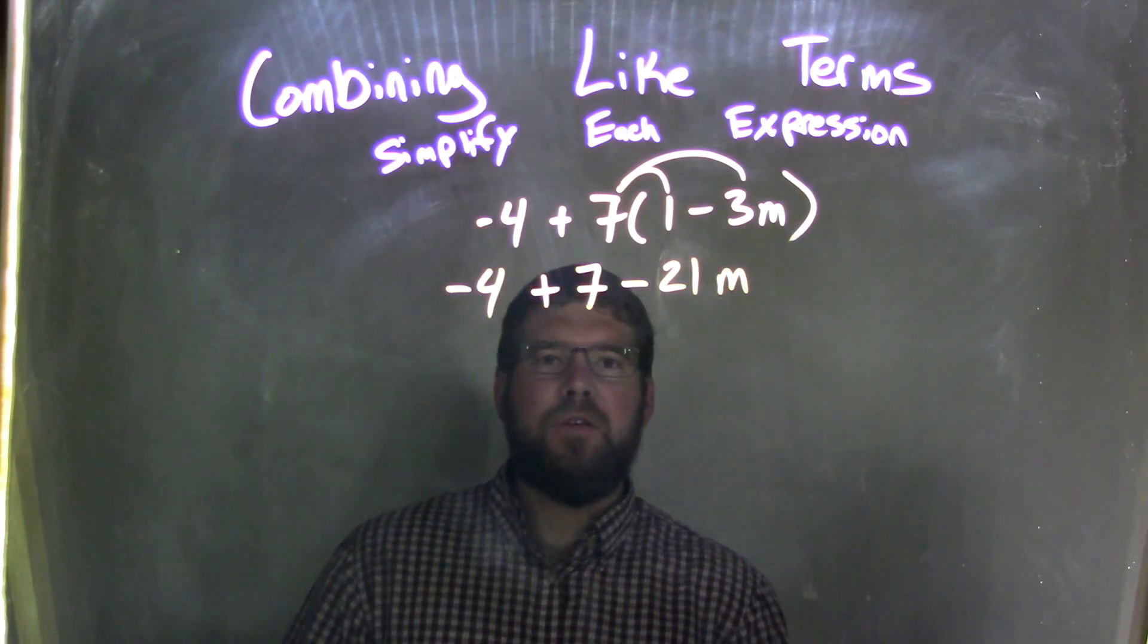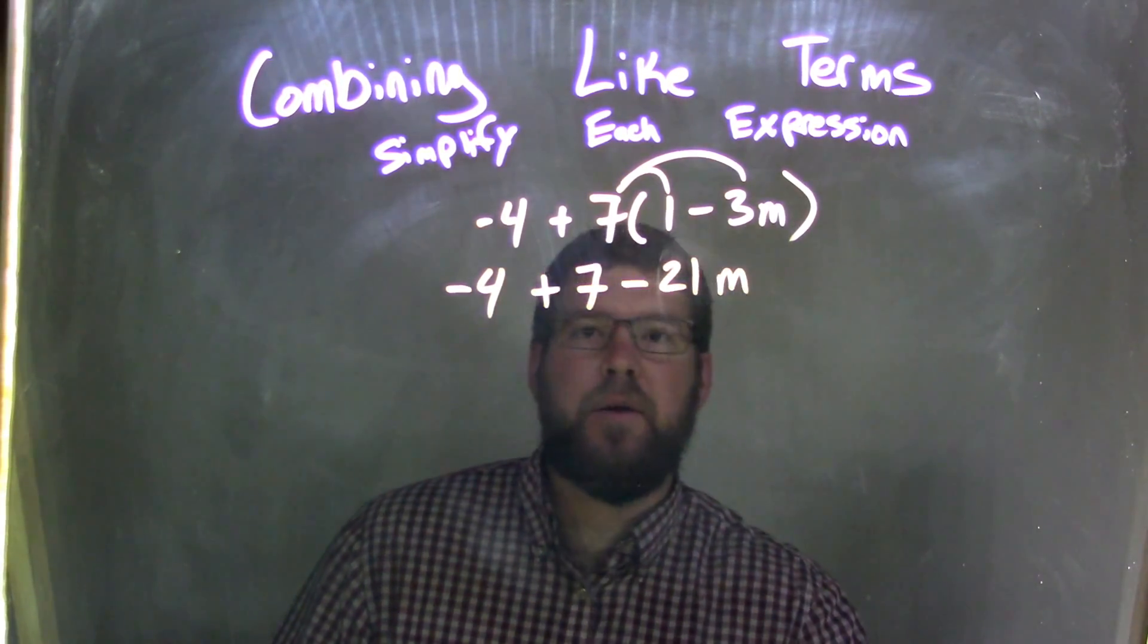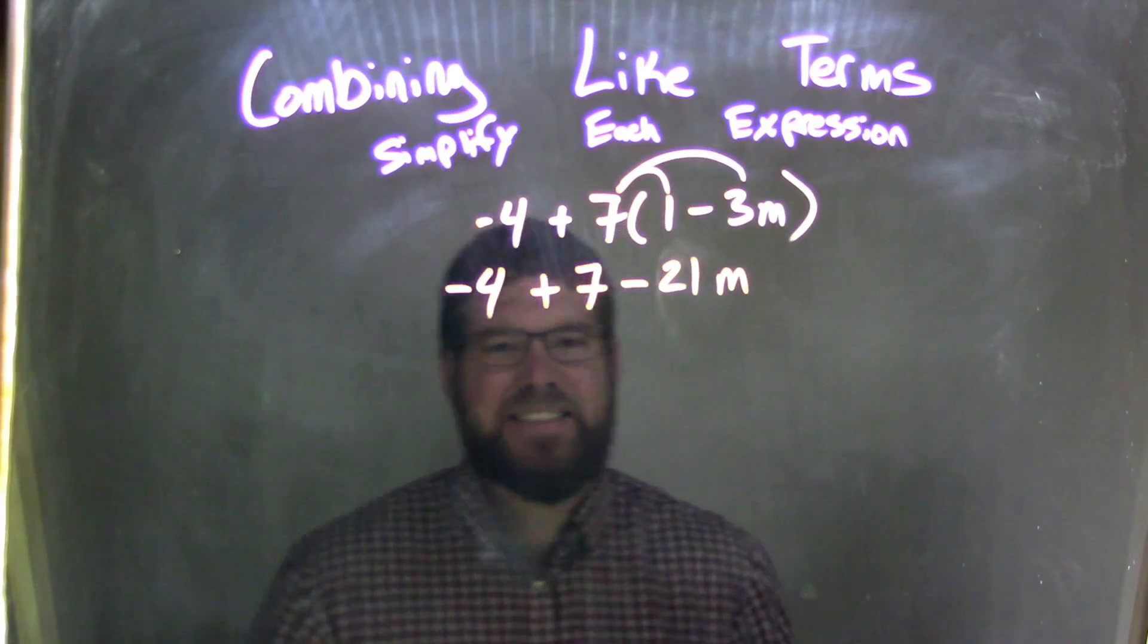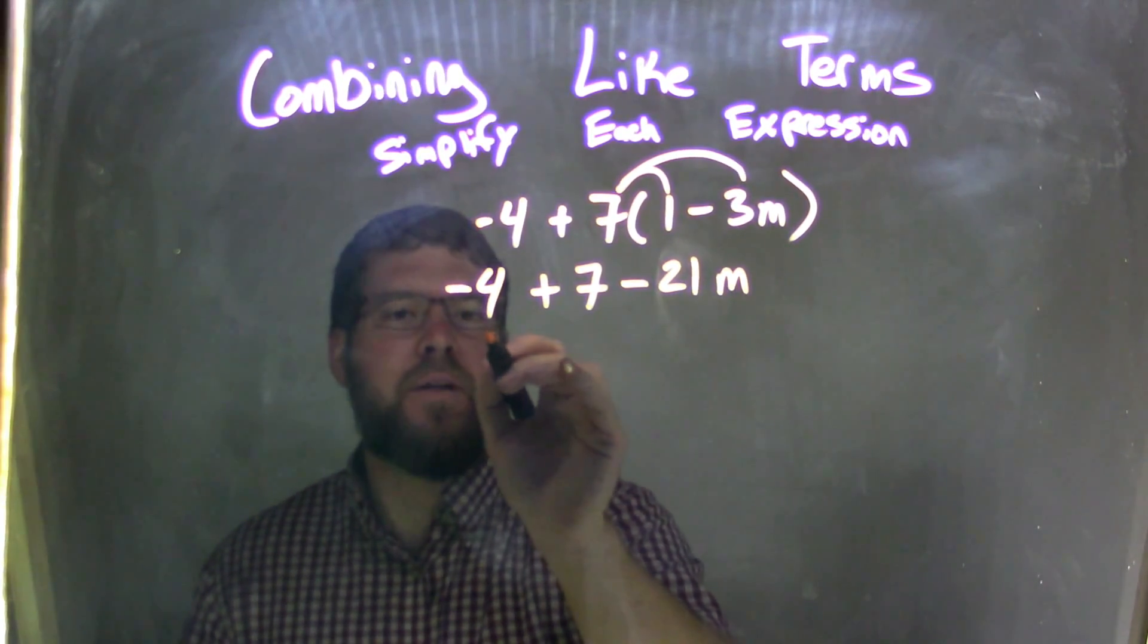Okay? So now we have our like terms that are next to each other here, which is nice. So negative 4 plus 7. Hopefully you can see that's going to be a 3. If not, we can use the commutative property really quickly.